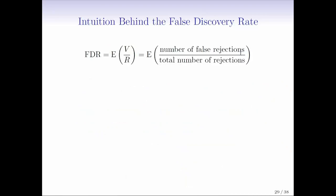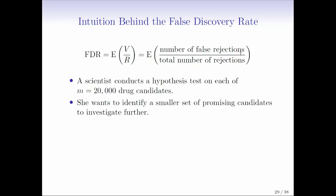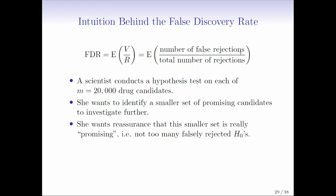The false discovery rate is the expectation of this ratio, which is the number of false rejections divided by the total number of rejections. We have 20,000 drug candidates. We want to identify a smaller set of promising candidates to investigate further. But we don't want the smaller set of promising candidates to have too much garbage. We want some assurance that that set of quote-unquote promising drug candidates really is promising. So we want the FDR to be not too big.